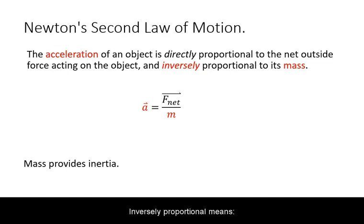Inversely proportional means that as one variable increases, the other must decrease. In the case of Newton's second law, acceleration and mass are inversely proportional.